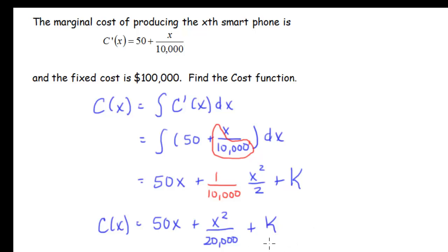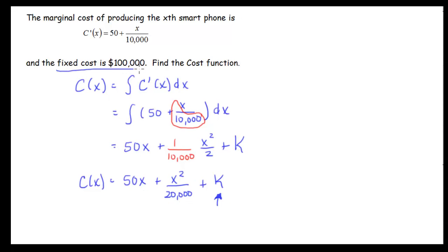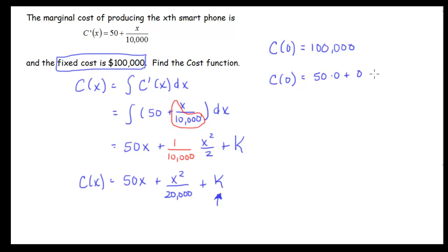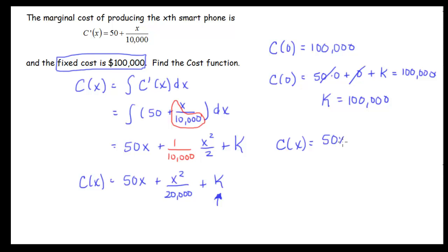We want the actual cost function without an unknown constant. The fixed costs of $100,000 tell us the cost at zero units is $100,000. Plugging in zero: 50 times 0 plus 0 squared over 20,000 equals 0, plus k, which must equal 100,000. Both variable terms are zero, so k equals 100,000. Therefore the cost function is 50x plus x squared over 20,000 plus 100,000.